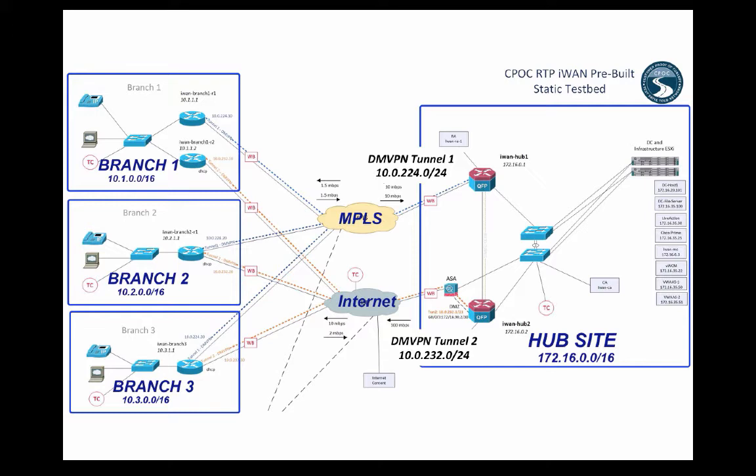What we have in front of us is three branches. Branch one has two routers on it, both of them are 4321s. The top HockeyPuck router is branch one router one, which is connected to the MPLS cloud. Branch one router two is connected to the internet cloud. In the lab environment, everything at branch one is in the 10.1/16 address space.